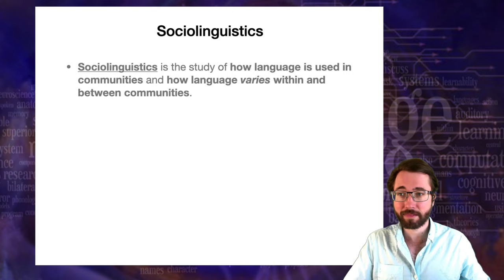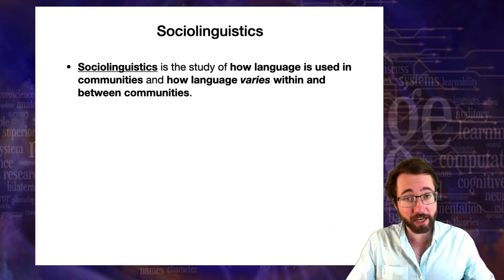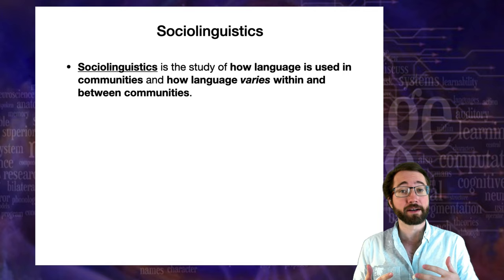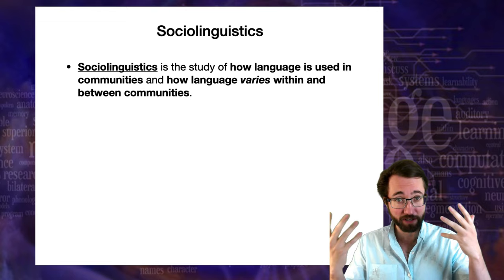Sociolinguistics is the study of how language is used in communities and how language varies within and between communities. Pragmatics was the study of how we use language on a micro-scale interaction, like a conversation. But sociolinguistics is about how language manifests itself on the level of a large society — large communities, communities that contain within themselves other communities.